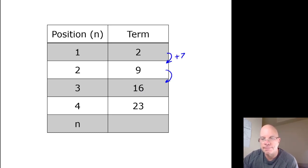It's increasing by seven each time, so the rule is going to start with seven times the position number. But when n equals one, seven times one is seven, but we want two, so I want five less than I have.